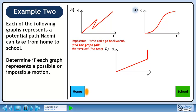Now we'll investigate graph B. The animation shows Naomi accelerate to the midway point between home and school. She then decelerates as she completes the second half of the motion. This motion is possible.